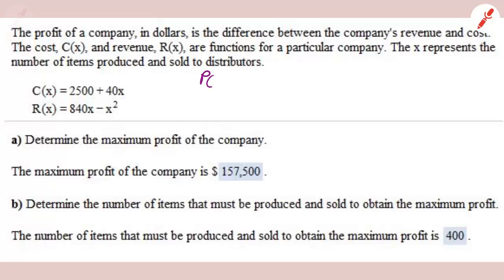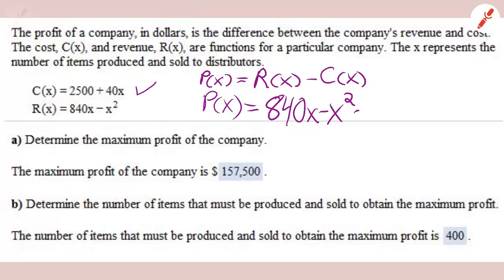Finally, here's our last one. The profit of a company in dollars is the difference between the company's revenue and cost. Revenue is the amount of money you take in. Cost is the amount of money you have to spend. So the rest of the problem says that. And x represents the number of items produced and sold by the distributors. So here are your two formulas. The total cost is this and the total revenue is this.